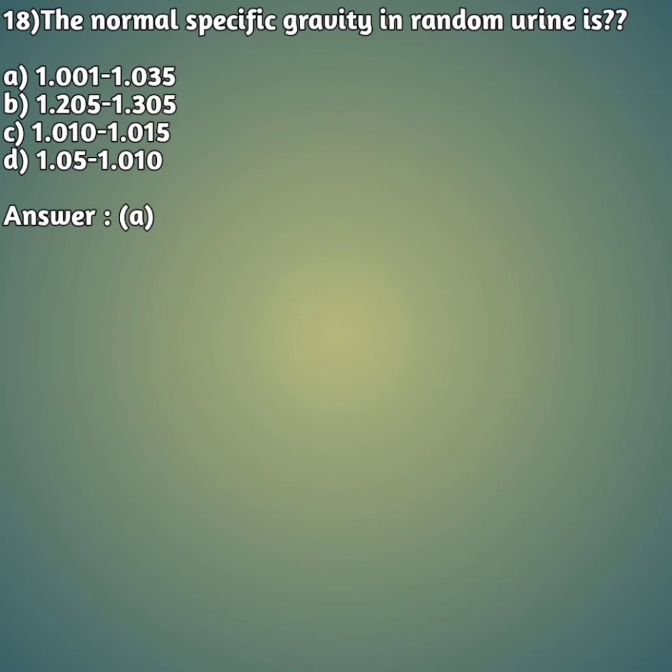Question 18: The normal specific gravity in random urine is — option A: 1.001 to 1.035, option B: 1.205 to 1.305, option C: 1.010 to 1.015, option D: 1.005 to 1.010. The right answer is option A: 1.001 to 1.035 is the normal specific gravity in random urine.